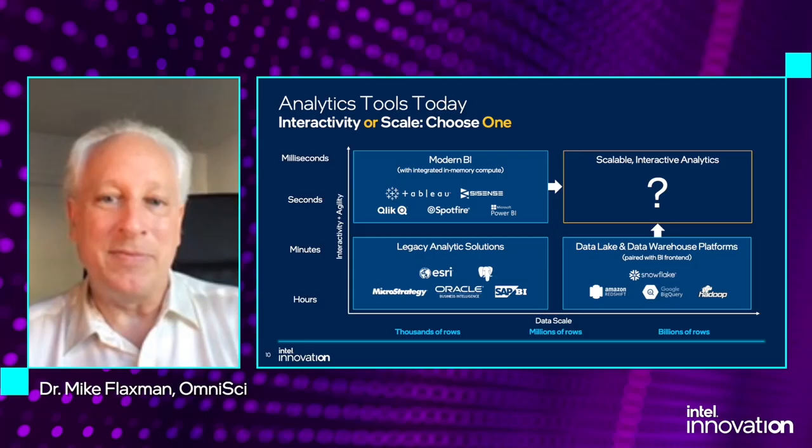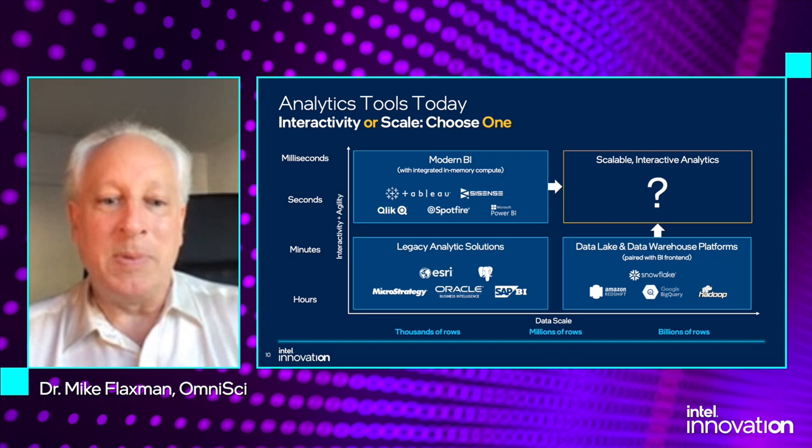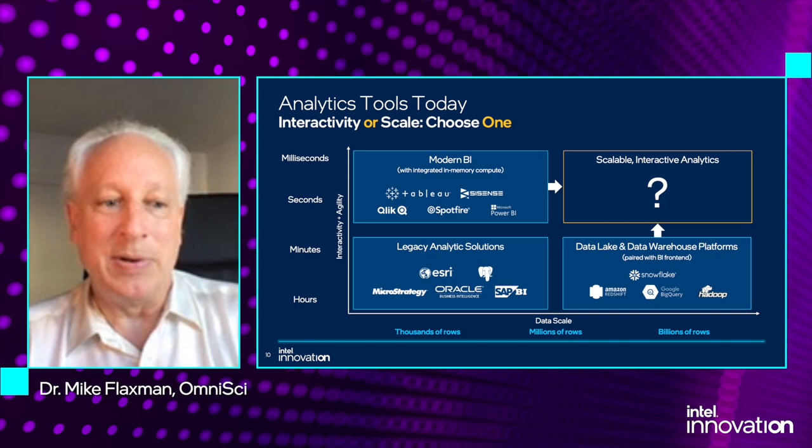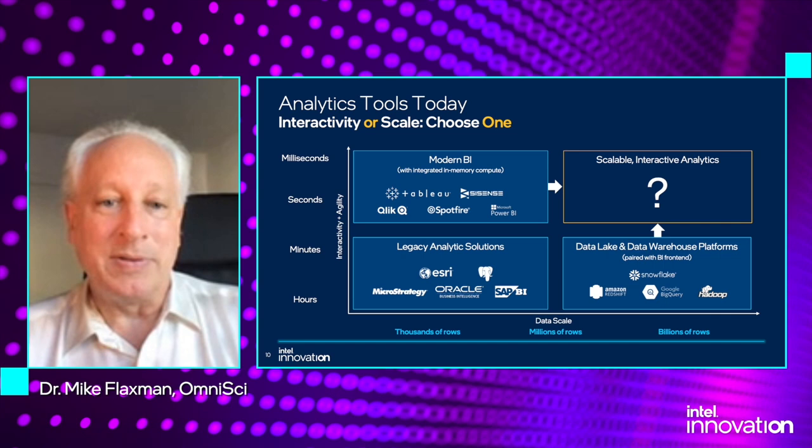OmniSci was designed to solve a particular challenge with modern analytics. A lot of tools today allow interactivity or they allow scale, but they force you to choose one or the other. With very small datasets, it's not usually an issue — legacy analytics solutions can deal with thousands of rows interactively without a problem. But if you push that to millions or billions of rows, all of a sudden your options get significantly more limited.